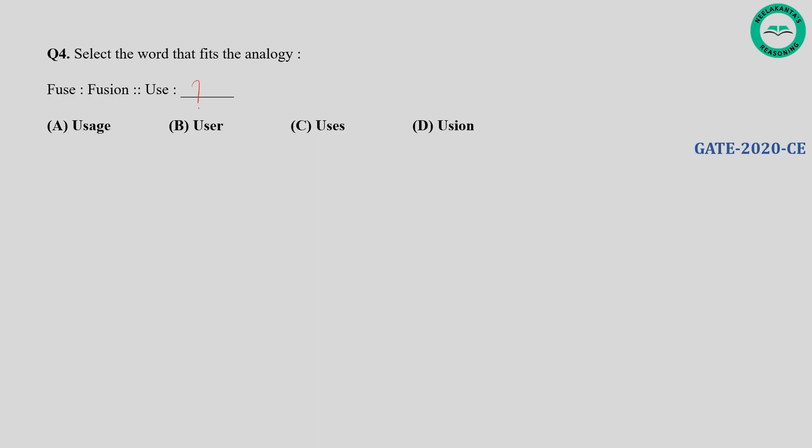Question number four: Select the word that fits the analogy — Fuse, Fusion, Use, blank. The relationship between fuse and fusion is that fuse is the root word and fusion is derived from it. Similarly for use, the derived word would be usage. So the correct answer is option A.